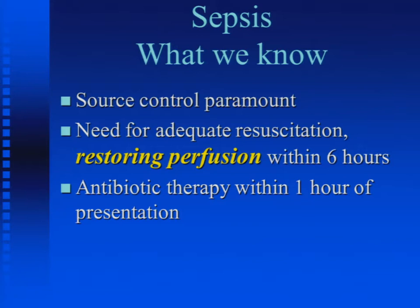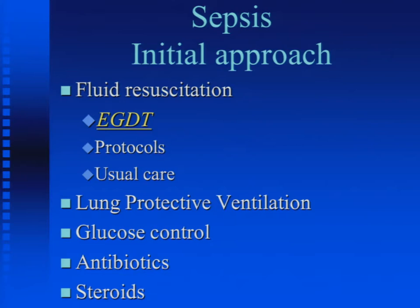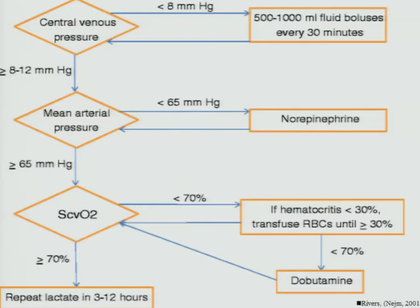What we know about sepsis after Dr. Rivers' work is that we need to control the source, restore perfusion, and give antibiotics. A few years ago we came up with early goal-directed therapy — target CVP, transfuse, and use pressors. That seemed like a great idea at the time. But as we learned over the past couple of years, things may have switched. The paradigm may have changed.